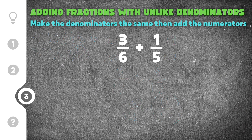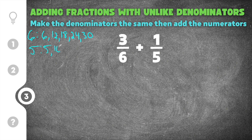The final practice problem is three sixths plus one fifth. Since the denominators aren't equal, we need to find the least common multiple of 6 and 5. Listing multiples of 6: 6, 12, 18, 24, 30. Listing multiples of 5: 5, 10, 15, 20, 25, 30. Both lists share 30, so 30 is our least common multiple.